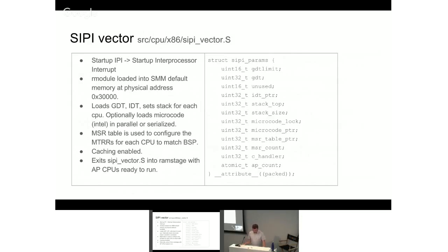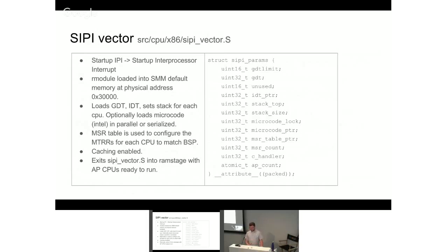To bring each AP out of reset, you send a startup IPI and that's the wait-for-SIPI state. We also need code for it to jump to — when you send a SIPI you send the vector for it to start executing from. We have the SIPI vector as an R-module that we load into the SMM default space at 30000h. Once that's up, we send SIPIs to all APs. They start executing at that vector, initialize GDT, IDT, set up stacks, optionally load microcode, and set up all MTRRs via the MSR table, then turn caching on. So right out of the SIPI vector, once we hit C we're ready to go, cache-coherent across the board, and can jump right into the state machine for SMM relocation and CPU initialization for all APs.